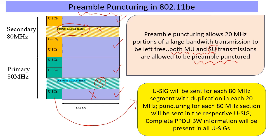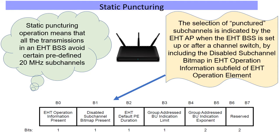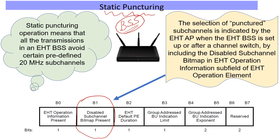Of course the primary 20 megahertz cannot be punctured by downlink transmissions. The more interesting use case is that the AP can now decide to enforce a static puncturing rule on the whole BSS. This becomes interesting because the AP is wanting to manage frequency resources across the entire deployment with help from other APs, controllers, etc. Wi-Fi 7 allows an AP to announce the puncturing pattern in a bitmap and enforce this on all members of the BSS. This can be done in frames like beacons, probe responses, as well as channel switch announcement frames.